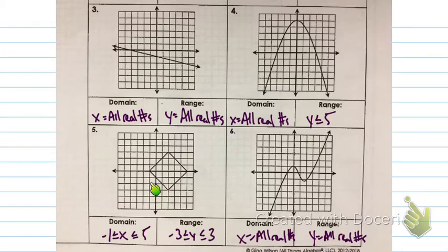For number 5, my domain's going to go between negative 1 and 5, and those points also work. So that's my left to right. My possible up and downs, it goes as low as negative 3, and goes as high as 3. So that's where I got my range, being between negative 3 and 3, but those values working.